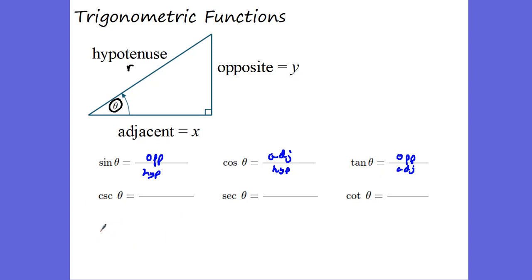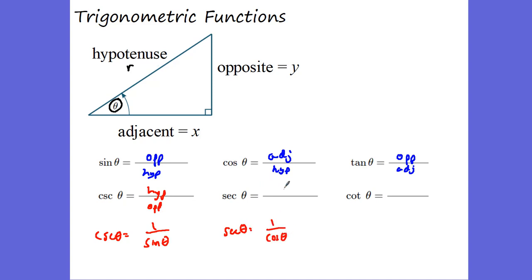We have these other functions. Cosecant of theta is the reciprocal of sine of theta, which means it's the hypotenuse over the opposite — it just flips it. The secant of theta is 1 over cosine of theta, or hypotenuse over adjacent. And cotangent of theta is 1 over tangent of theta, which is adjacent over opposite.